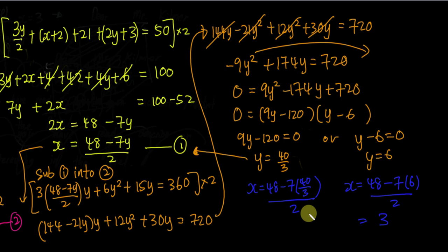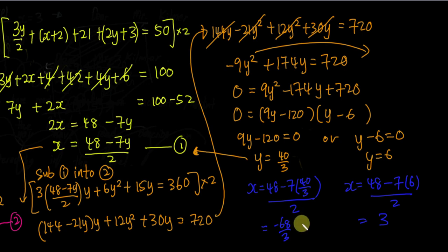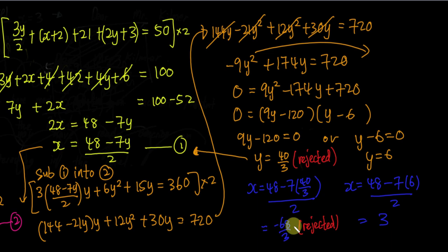For y = 40 over 3, substituting gives a negative value for x — negative 68 over 3. However, because x and y represent lengths, it is impossible to get a negative value. So whenever I get a negative answer, I reject both x and y from that pair — not just one of them — because both values must be positive. Therefore, I take x = 3 and y = 6 as the valid solution.